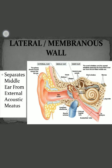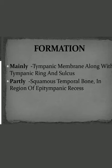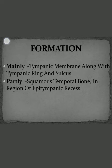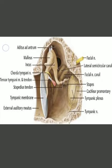The next wall is the lateral or membranous wall. It is called membranous because it is related to the tympanic membrane, and it separates the middle ear from the external acoustic meatus. The lateral wall is mainly formed by the tympanic membrane and the tympanic ring and sulcus. The portion above the tympanic membrane, in the epitympanic recess, is formed by the squamous part of the temporal bone.